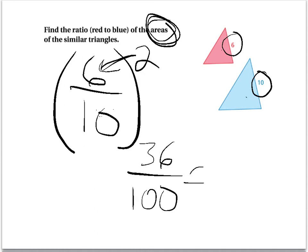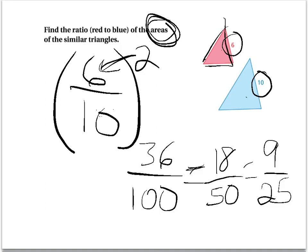However, you can reduce this. Divided by 2 is 50, and divided by 2 is 18. I can do it again, actually. Divided by 2 is 9, divided by 2 is 25. So, 9/25. So that says that this triangle is 9/25 the area of that other triangle.